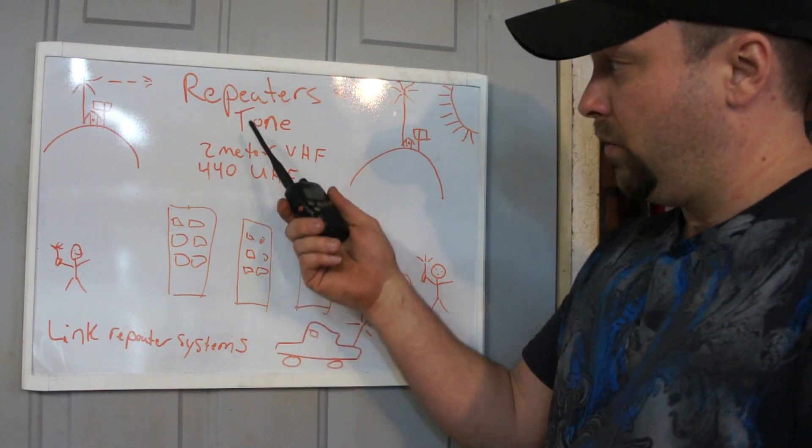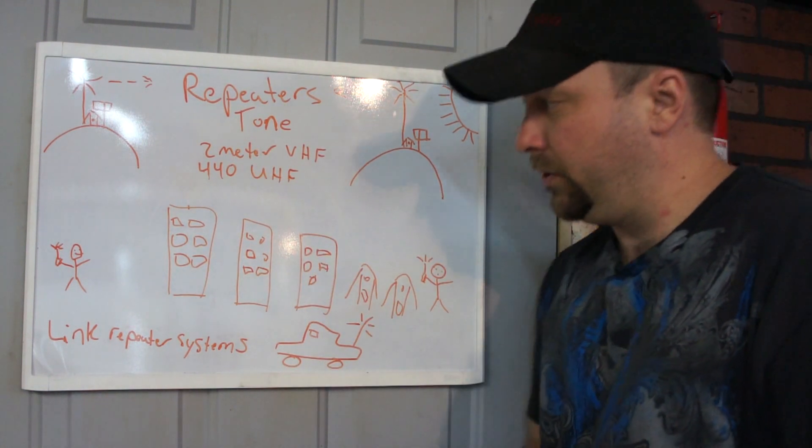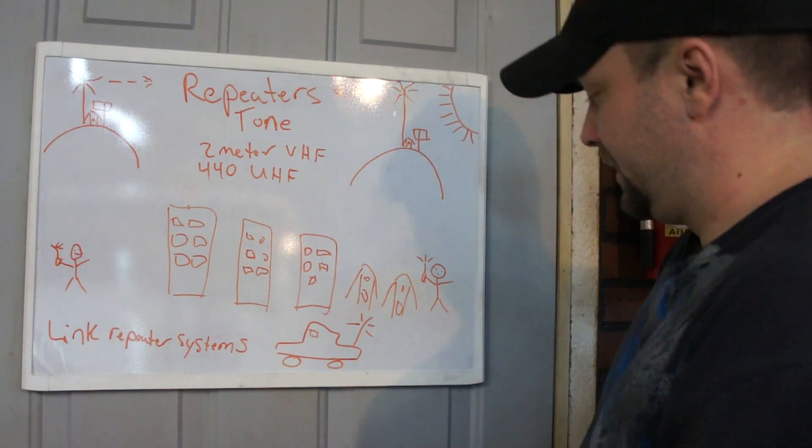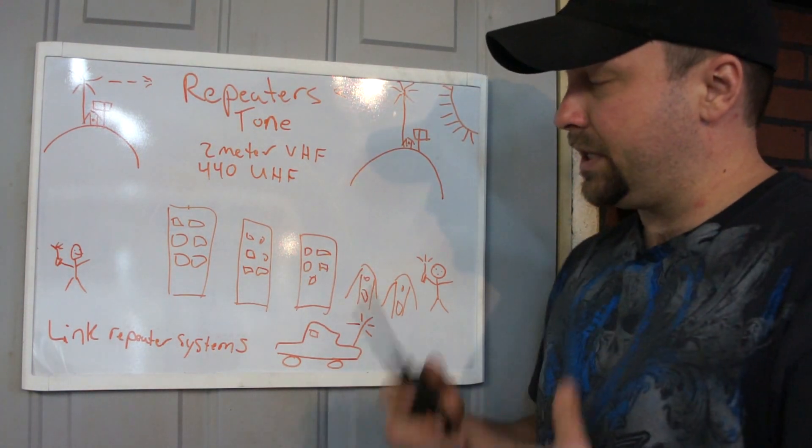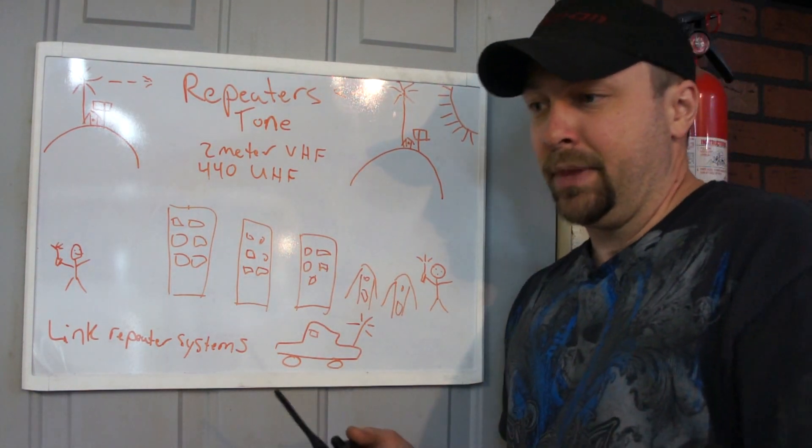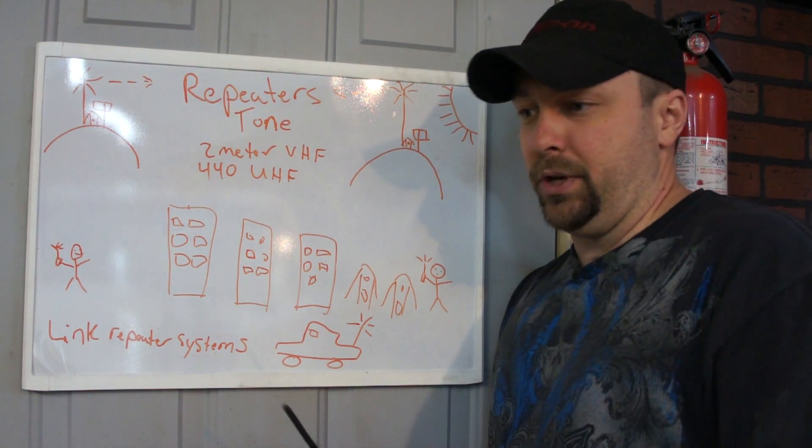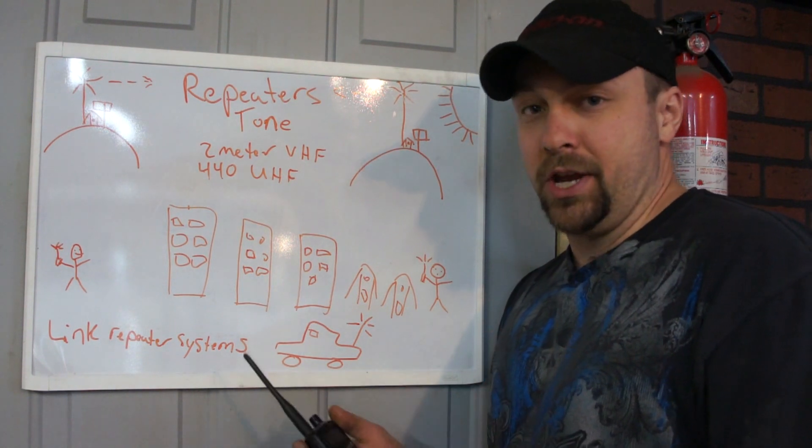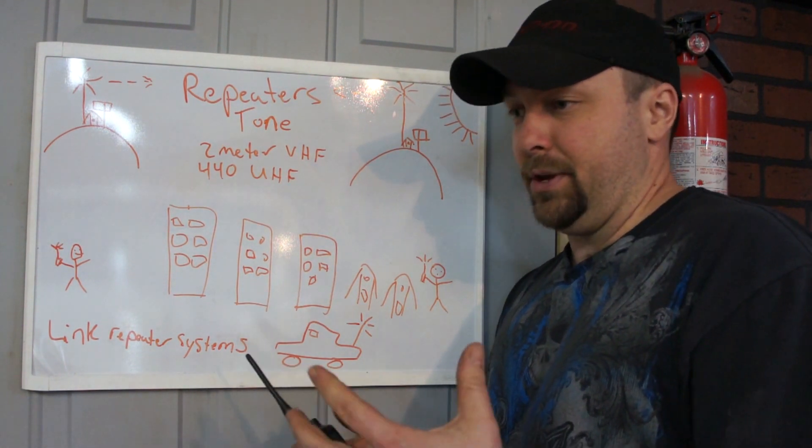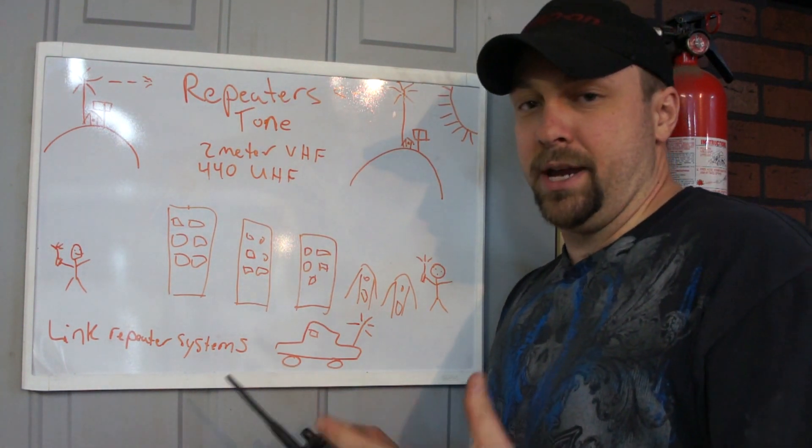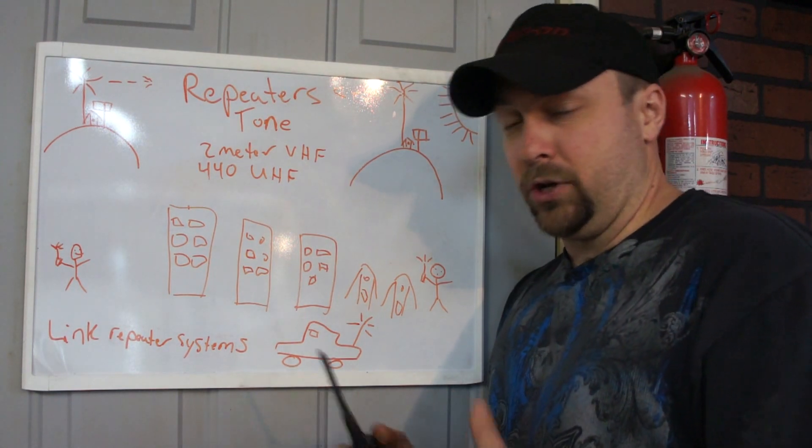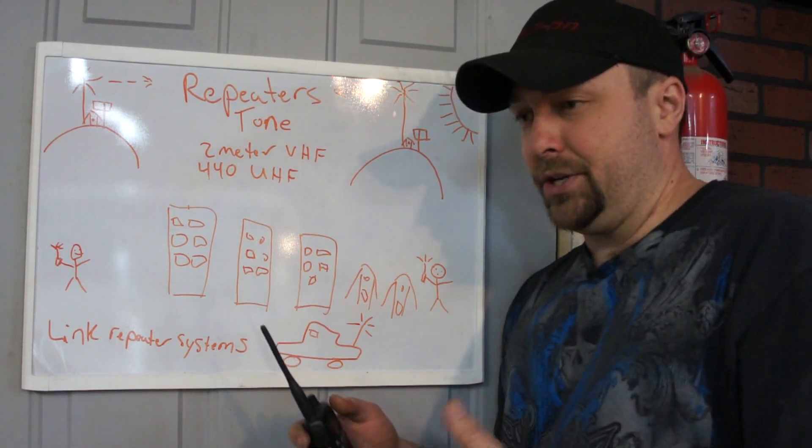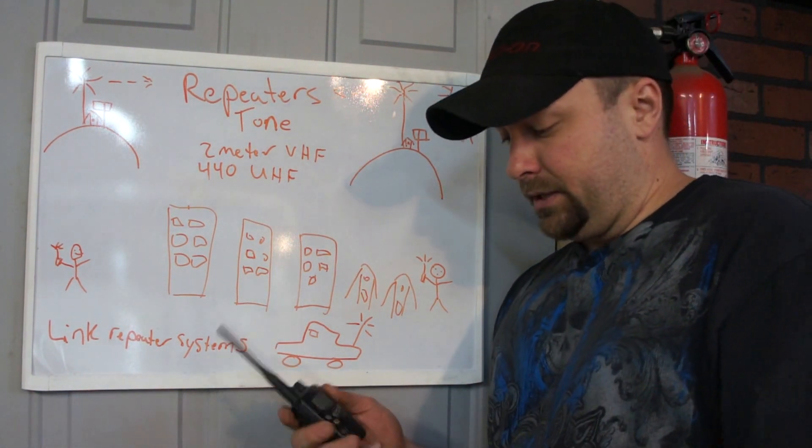Well what is a tone? A tone is the key to the gateway here to get into the repeater system. To keep the repeaters from accidentally broadcasting when the sun does something goofy or there's some kind of interference in the area or something accidentally broadcast near the repeater that could cause the repeater to open up, we use what's called tone.